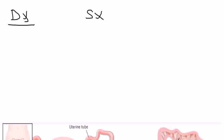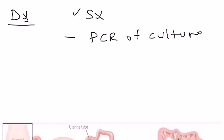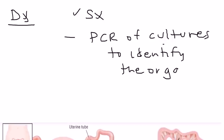How do you diagnose PID? The classic symptom triad — abdominal tenderness, adnexal tenderness, and cervical motion tenderness — is definitely helpful. But you also need to do either PCR or cultures to identify the organisms. The two most common organisms to identify are Neisseria gonorrhoeae and Chlamydia trachomatis.